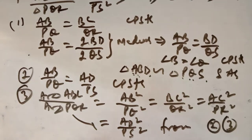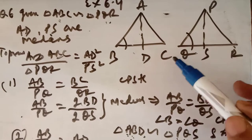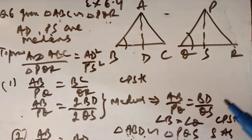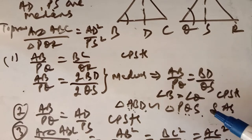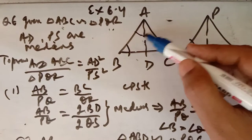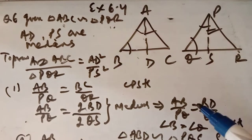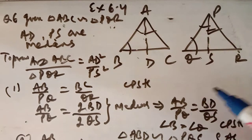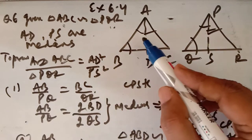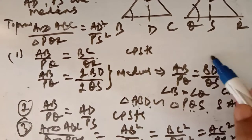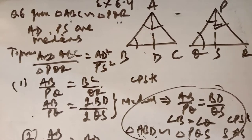We can also prove the same result if AD and PS are altitudes — the ratio of areas will equal the square of the corresponding altitudes. Similarly, if AD and PS are angle bisectors of angle A and angle P, the ratio of their areas is also equal to the ratio of the squares of the corresponding angle bisectors. The starting approach is the same; only the method of proving the smaller triangles similar will differ.